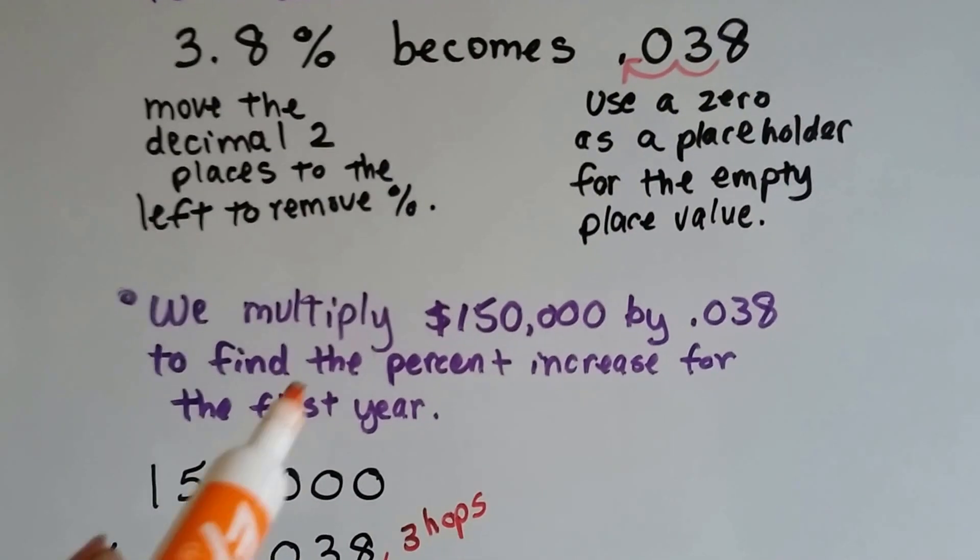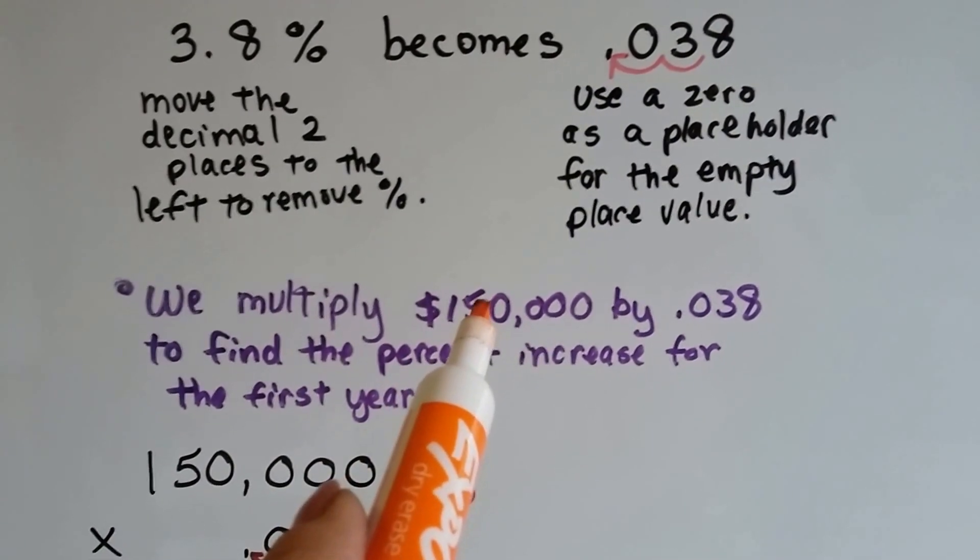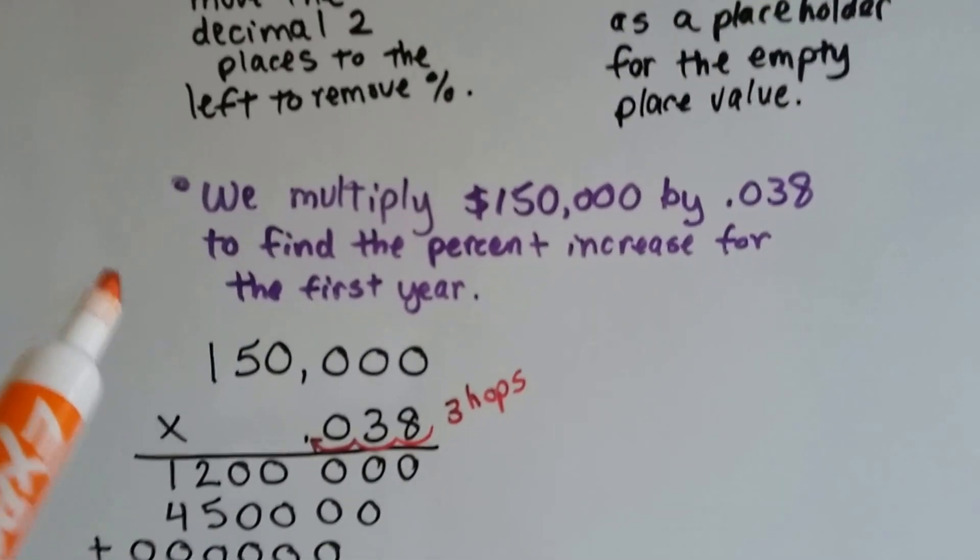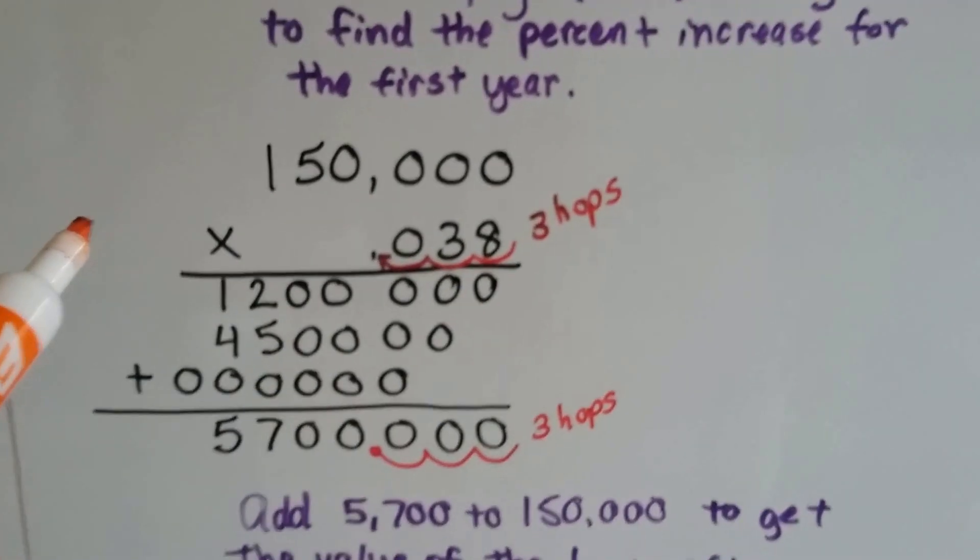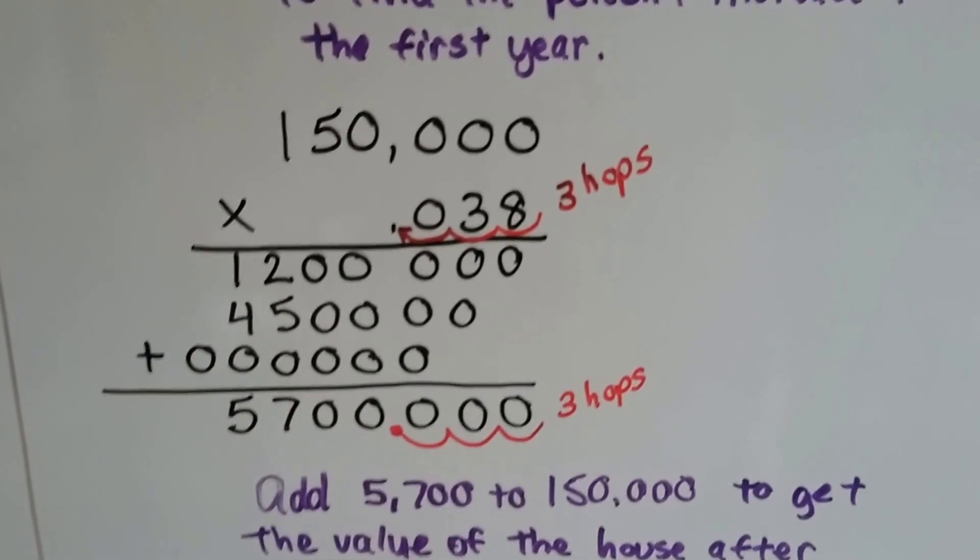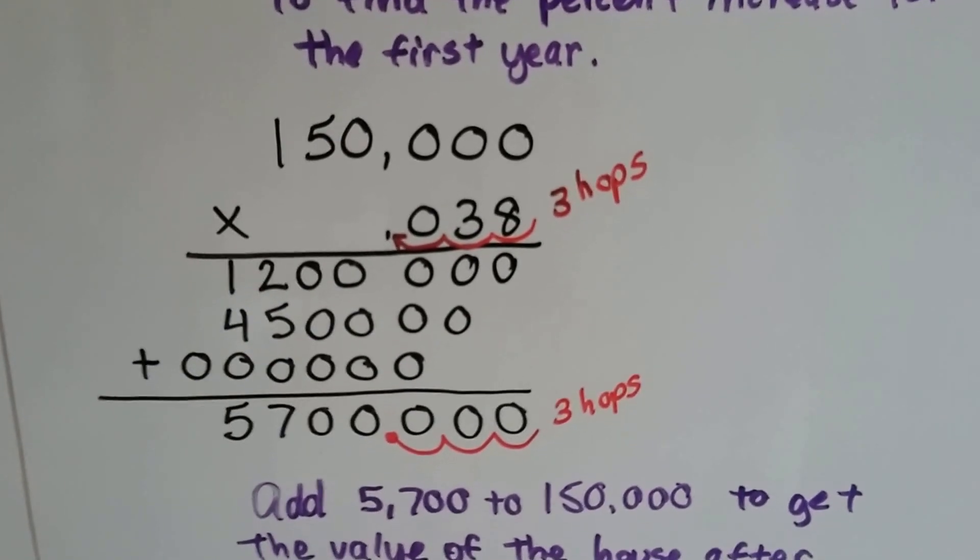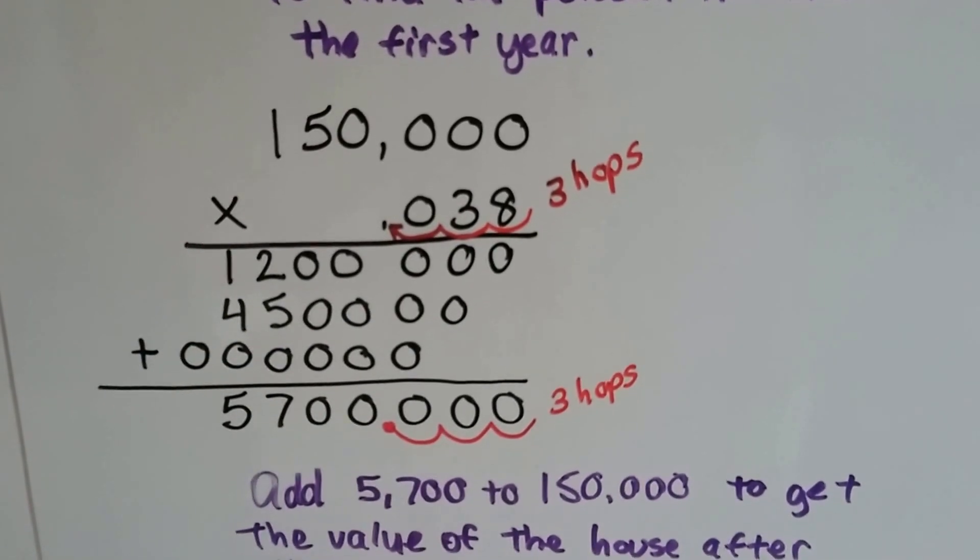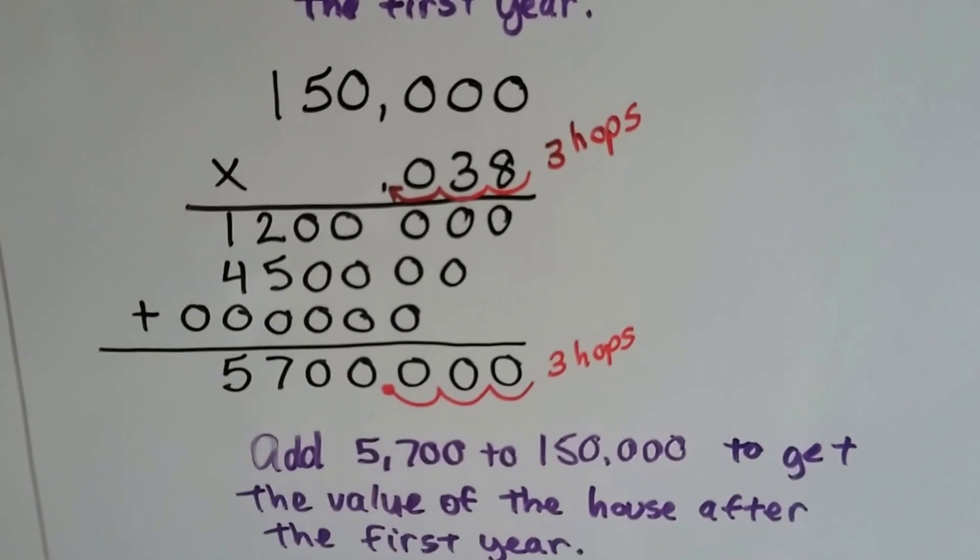So now we need to multiply the $150,000 by the 0.038 to find the percent increase for the first year. And we do it by hand. Now you could do it by calculator, but I prefer if you do some of these by hand at least, if not all. It's going to help you learn to think, and you're going to get better at doing multiplication, you're going to be quicker, you're going to think on your feet more.